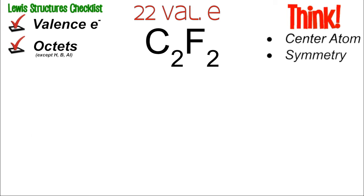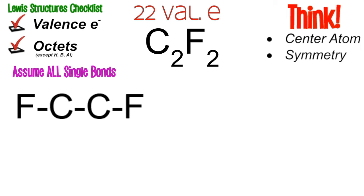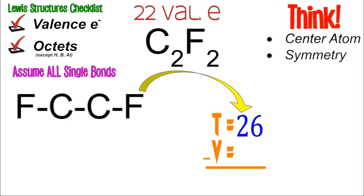C2F2 has 22 valence electrons. Carbons are center atoms, so place carbons in the middle with one fluorine on each side. Rather than drawing electrons twice, mentally count them: two above F, below F, to the left of F, count the bonds above and below each C, the bond in the middle, and the electrons around the other F. You should get 26 electrons mentally.